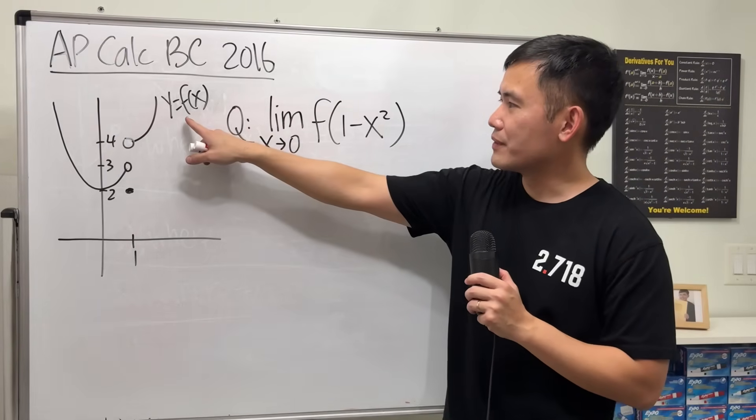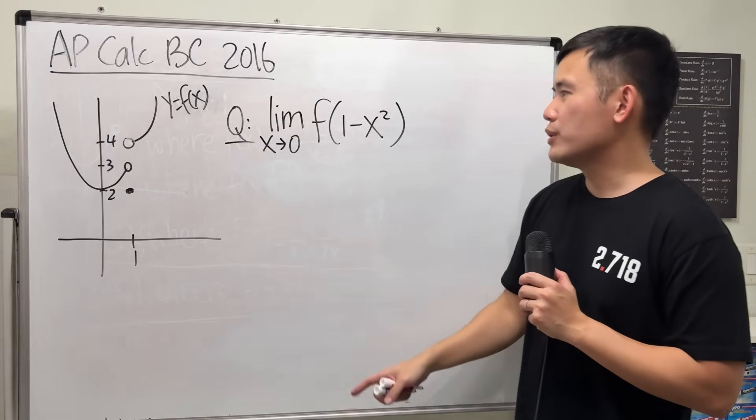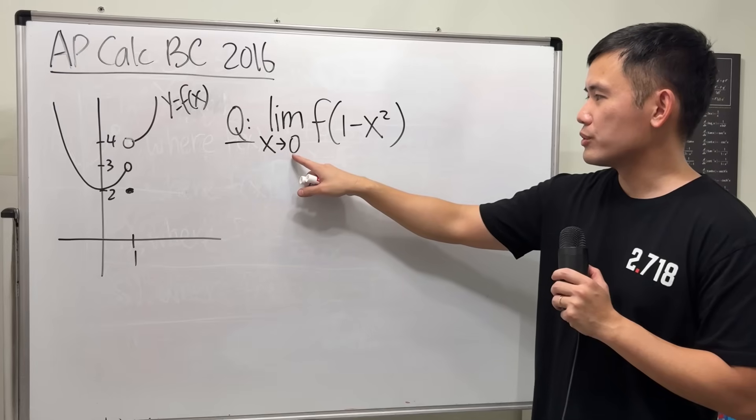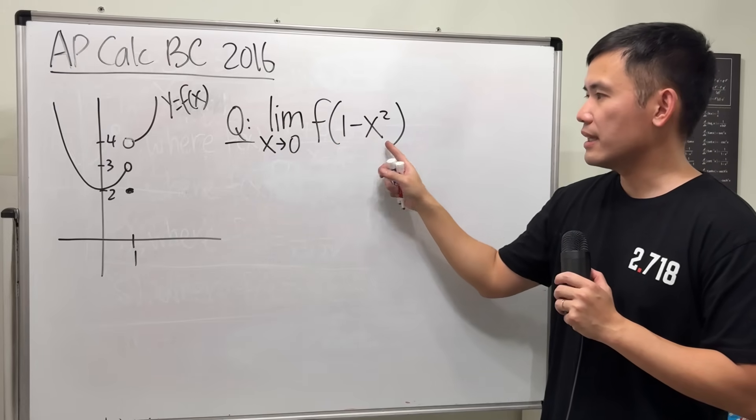First though, we have the graph for f(x). The question is asking the limit as x approaching 0 of f(1-x²).